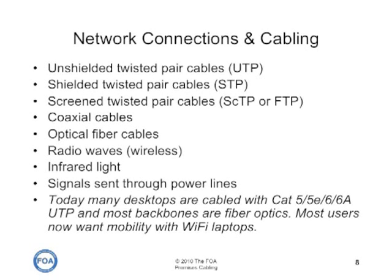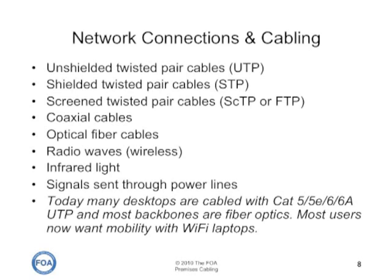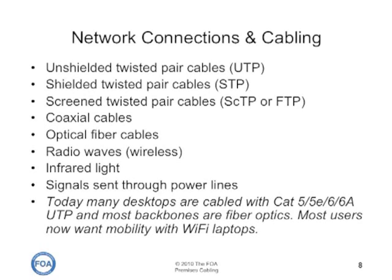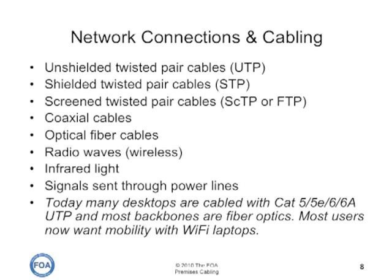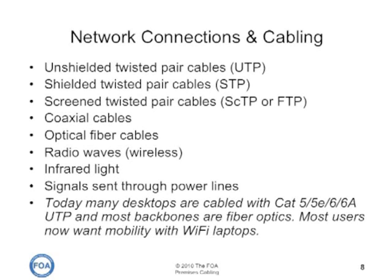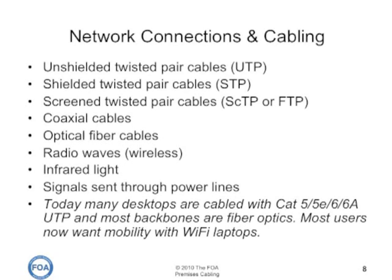Practically every kind of communications media has been used for networks, including our typical unshielded twisted pair cables of today, shielded twisted pair cables, or screened twisted pair cables, which are both used to reduce the amount of interference between the pairs or between adjacent cables. Coaxial cables, optical fiber, radio waves — which is very popular now as wireless — and even infrared light and signals sent through power lines have been used for network connections. Today, many desktops are cabled with CAT5 or some type of UTP cable, and most backbones in large corporate networks are fiber optics.